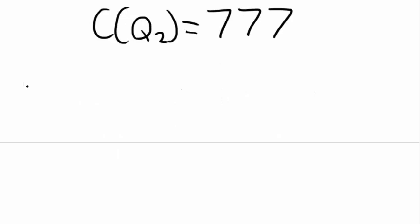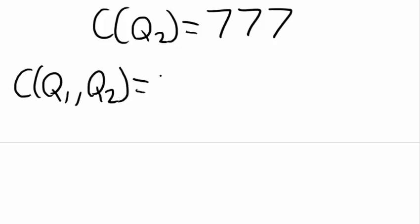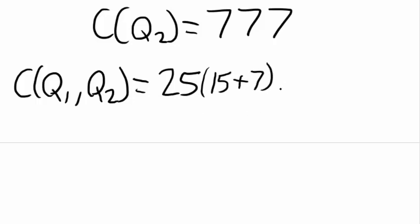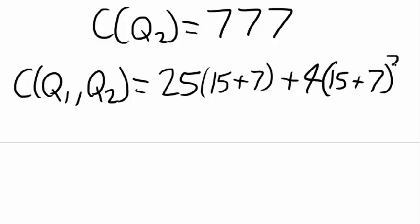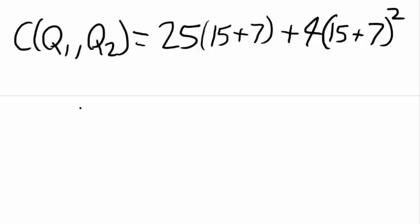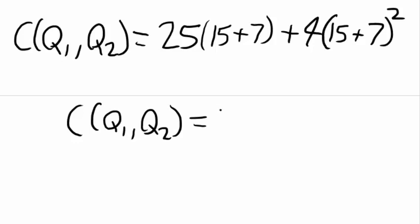For our last cost function — the cost for quantity 1 and quantity 2 — we have 25 times q, where q is 15 plus 7, which equals 22. That is added to 4 times (15 plus 7) squared. We find the cost for quantity 1 and quantity 2 equals 2,486.